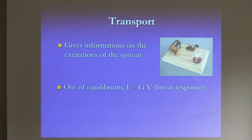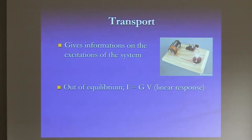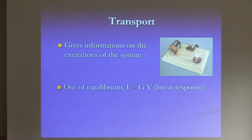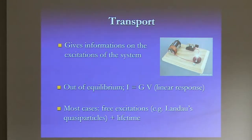Transport is also one of the simplest out-of-equilibrium situations one has to deal with. It's a steady-state, out-of-equilibrium situation. We deal with this usually by cheating — by going to linear response and assuming that the voltage you apply is very weak, so you can analyze the system in equilibrium. Of course, it's not always true, but this is one cheat we do most of the time.